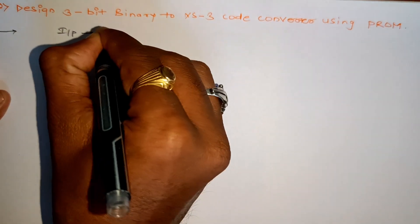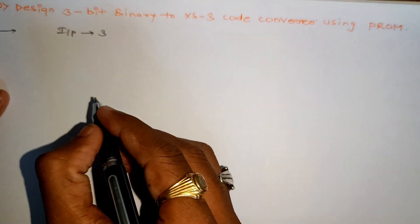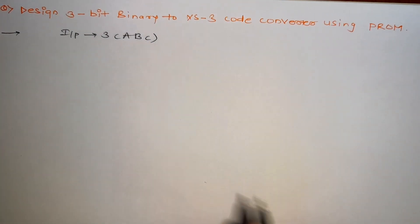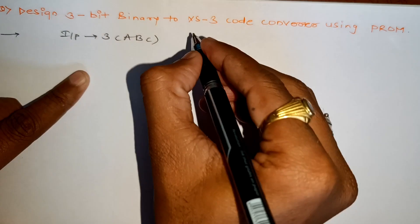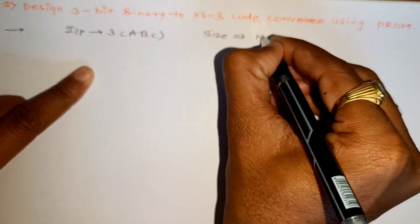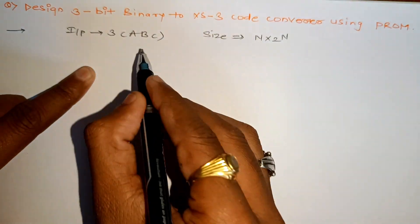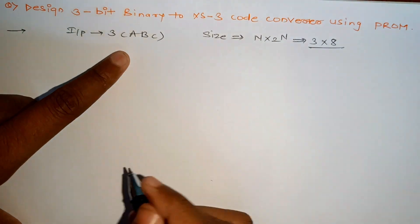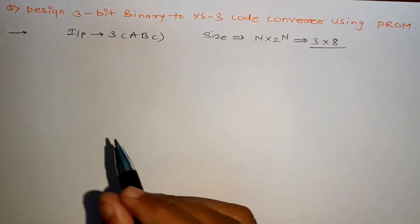It will be 3-bit, let's suppose it is A, B, and C. So as usual, if you see the size of decoder, it will be n by 2 raise to n. Now n is nothing but input, so here we have to use a 3 by 8 decoder.